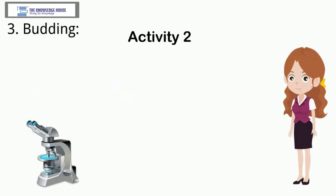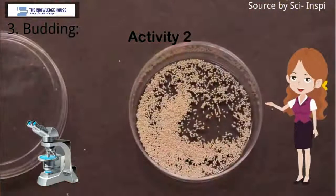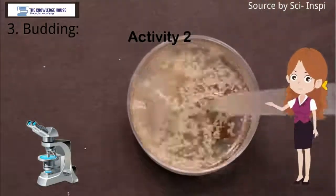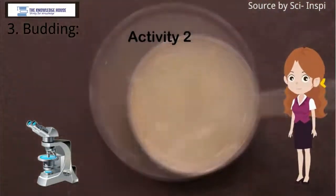You will see the yeast cells performing budding, that is a small bud coming out of many parent cells. Asexual reproduction occurs by budding in yeast or unicellular fungus.